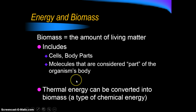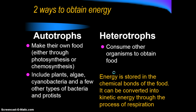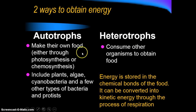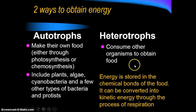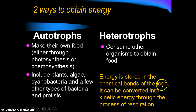There are two basic ways to obtain energy: you can be an autotroph or a heterotroph. If you're an autotroph, you make your own food either through photosynthesis or chemosynthesis — this includes plants, algae, cyanobacteria, and a few chemosynthetic organisms. Heterotrophs, on the other hand, have to consume other organisms to obtain food. In either case, the energy is stored in the chemical bonds of the food.